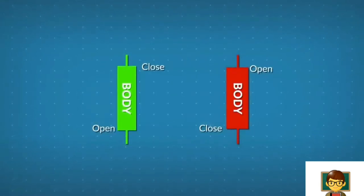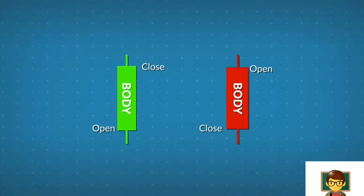The thin lines above and below the real body are called the shadows, representing the session's price extremes.